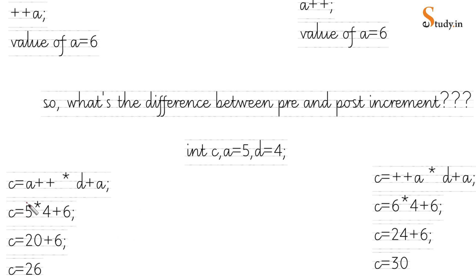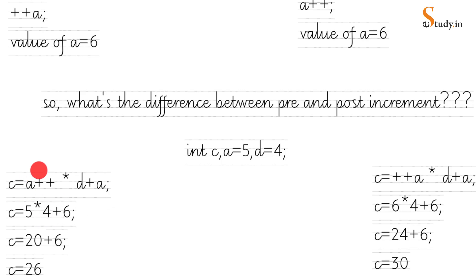When you solve this expression, rewrite it with spaces: a++ then multiply by d, then plus a. Because it is post-increment, the initial value is substituted as-is first, so we write 5. After this, the value of a becomes 6. So we get: 5 * 4 + 6. Moving left to right: 5 * 4 = 20, plus 6, gives the answer 26.